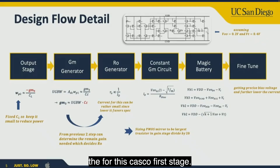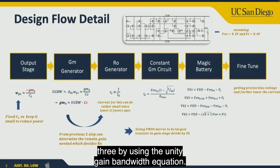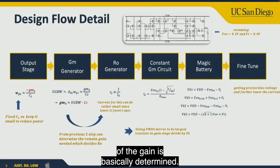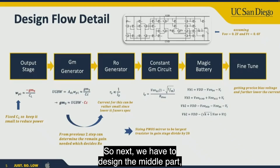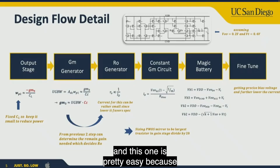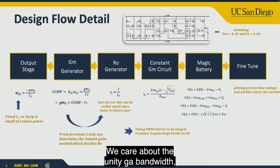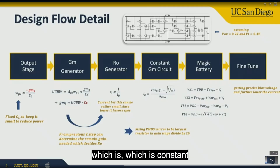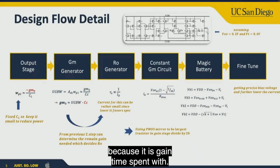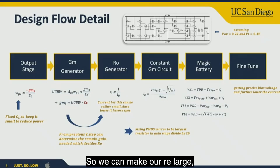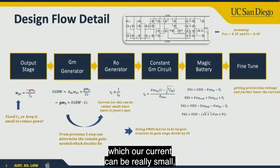We determine gm3 using the unity gain bandwidth equation, which essentially sets the first gain stage. Then we design the middle part — the Ro generator. Since bandwidth is not critical for this section, what matters is the unity gain bandwidth, which is gain times bandwidth. We can make Ro large so that the current can be very small, on the order of a couple hundred nanoamps.